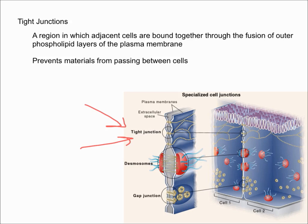Tight junctions prevent materials from passing between cells, so the purpose of tight junctions is to limit what passes between cells. This is pretty important.